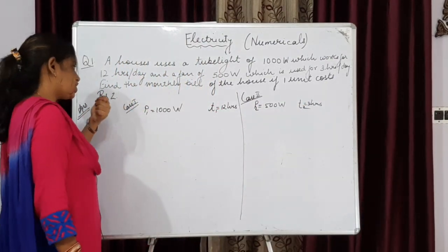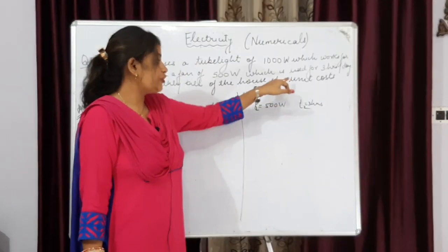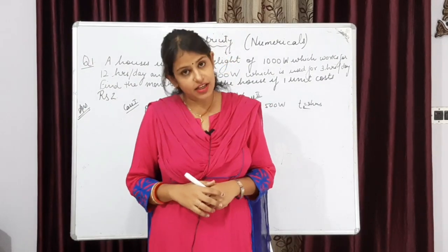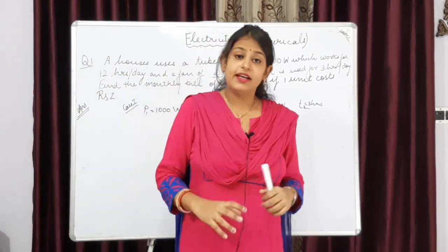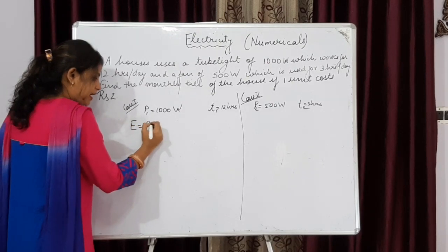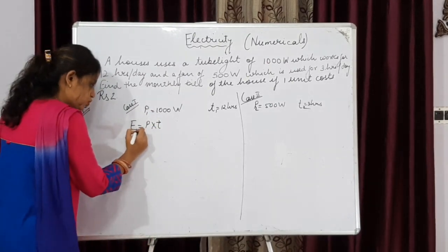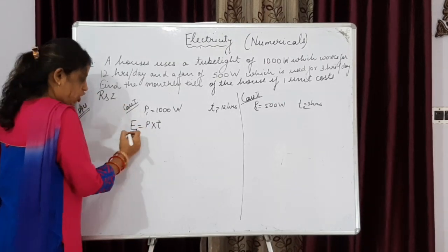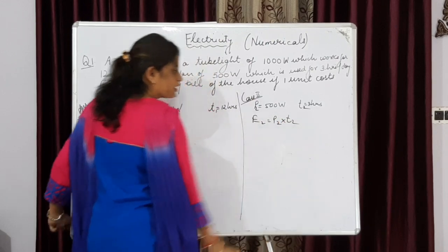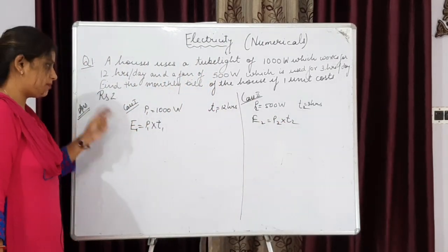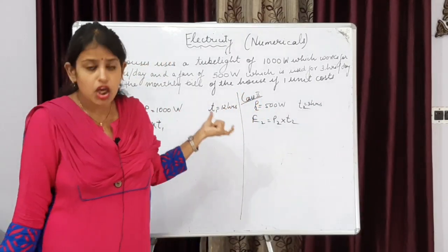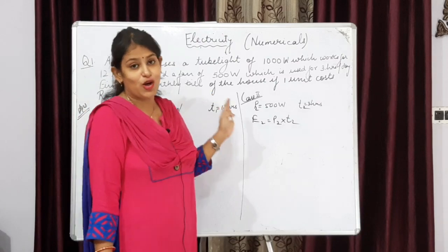Now the question asks: find the monthly bill of the house if one unit costs rupees 2. When monthly bill is asked, we have to find electrical energy — how much electrical energy is being consumed. The formula of electrical energy is power into time. So E1 (tube light case) = P1 × t1, and E2 = P2 × t2. This is the very basic thing to keep in mind while solving the numerical. As soon as you identify which formula to use, within seconds you will be able to solve the question, provided there are no calculation errors.